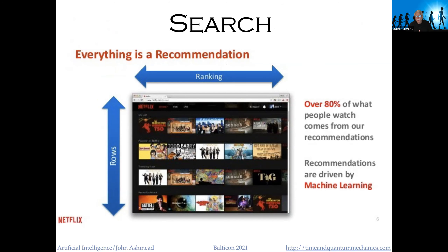The most omnipresent form of AI is search — we all deal with this every day when we do a Google search. This is a Netflix recommendation page showing movies you might want to see. Recommendation is trickier than you might think: you have to show people something like what they've already liked but different, and it's the 'but different' which makes it hard to program. So you use AI systems to look at all the choices people are making, and then figure out how to make that choice number one next time.